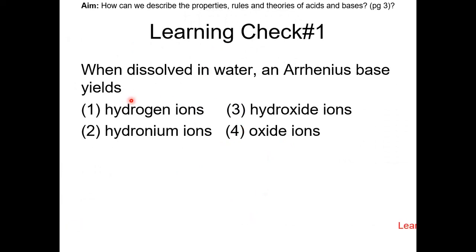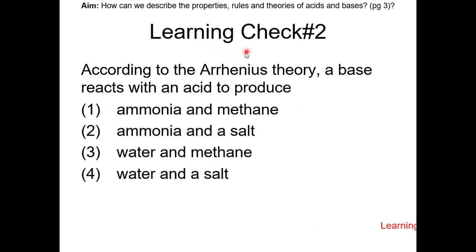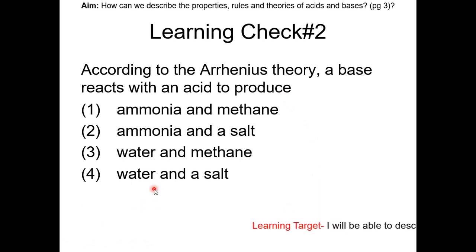Learning check number one: when dissolved in water, an Arrhenius base yields what? Pause the video and resume when completed. The answer is choice 3 — hydroxide ions. Learning check number two: according to Arrhenius theory, a base reacts with an acid to produce what? The answer is choice 4 — water and salt.